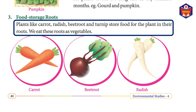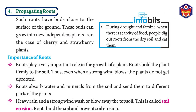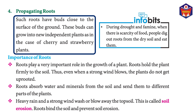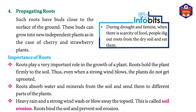We eat these roots as vegetables. Four: propagating roots. Such roots have buds close to the surface of the ground. These buds can grow into new independent plants, as in the case of cherry and strawberry plants. During drought and famine, when there is scarcity of food, people dig out roots from the dry soil and eat them.